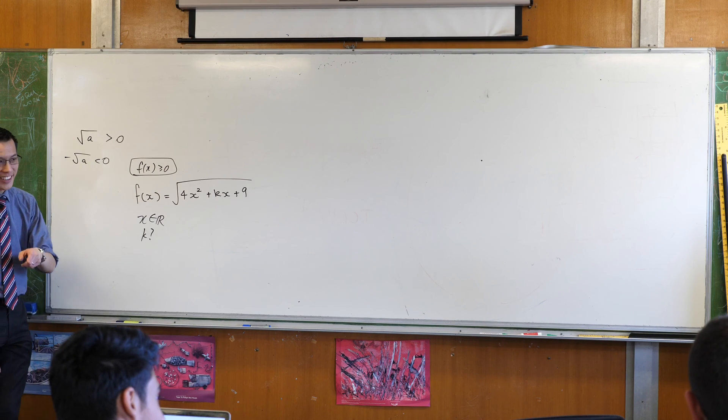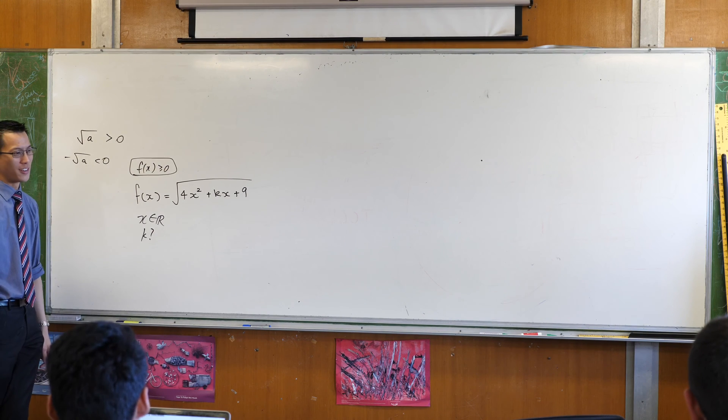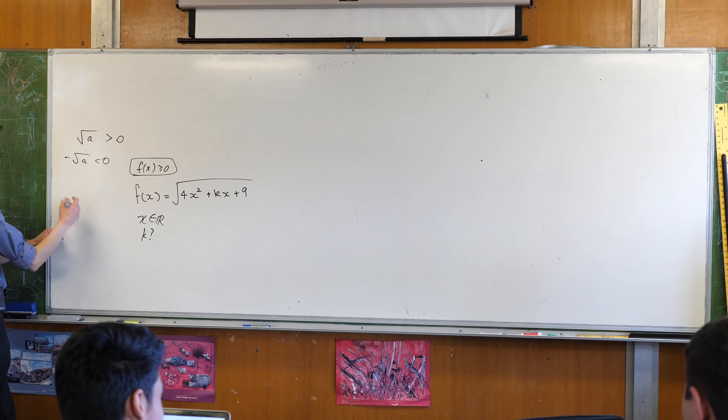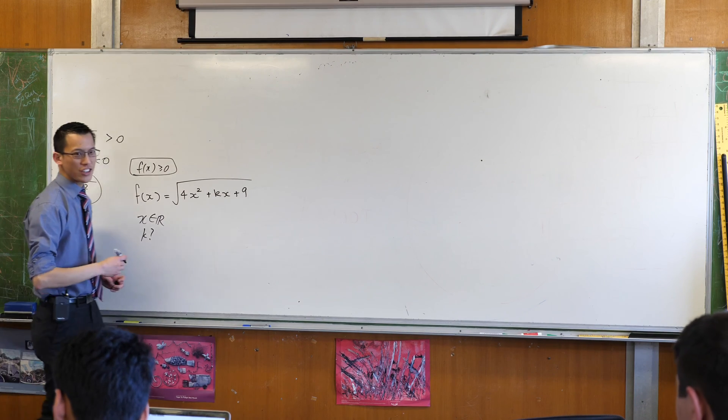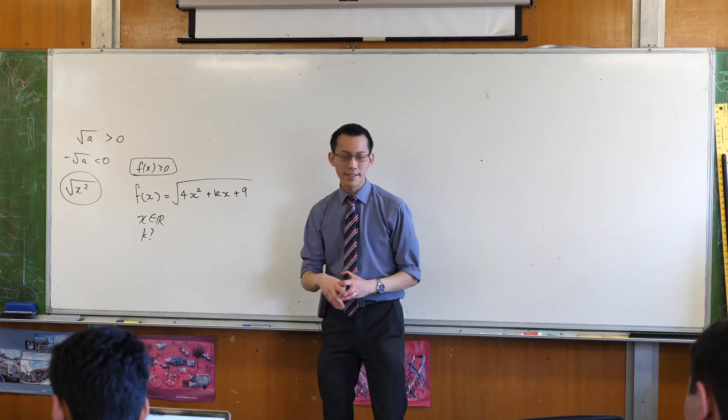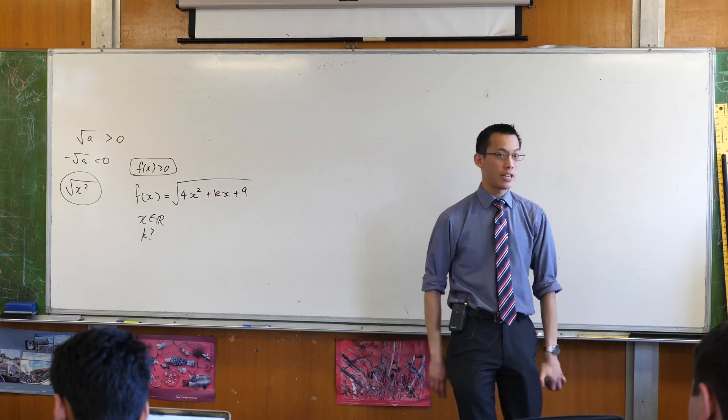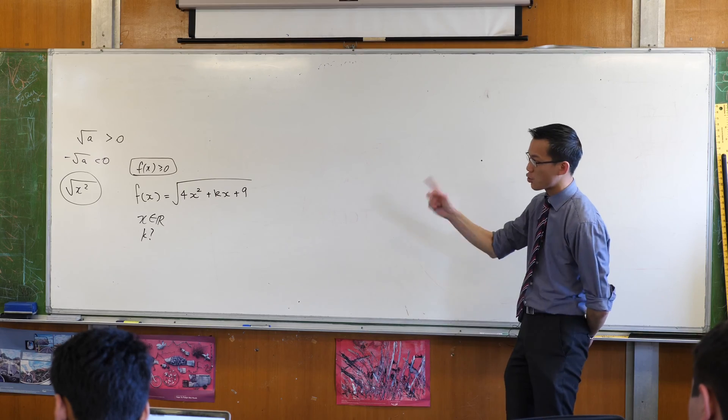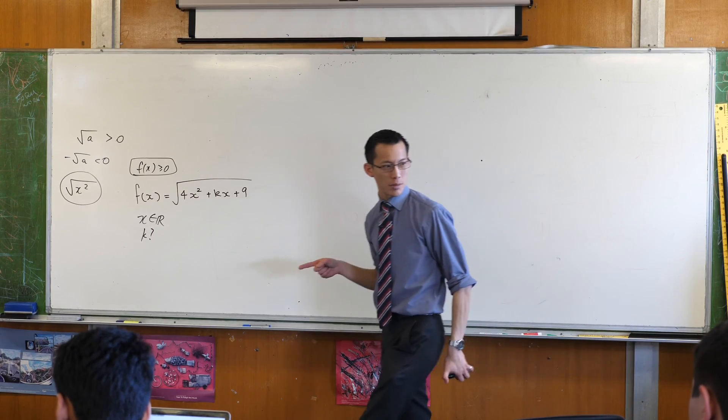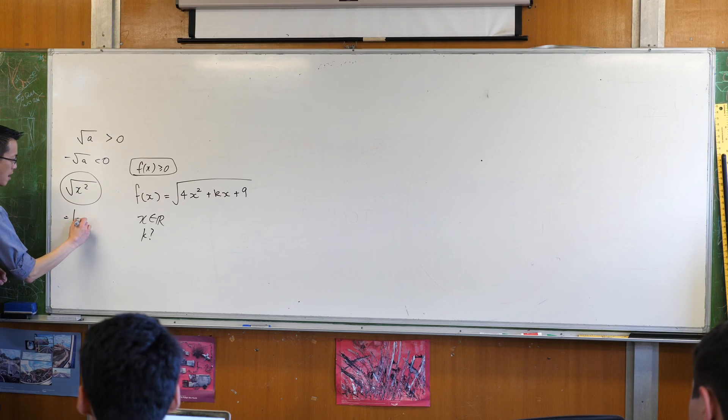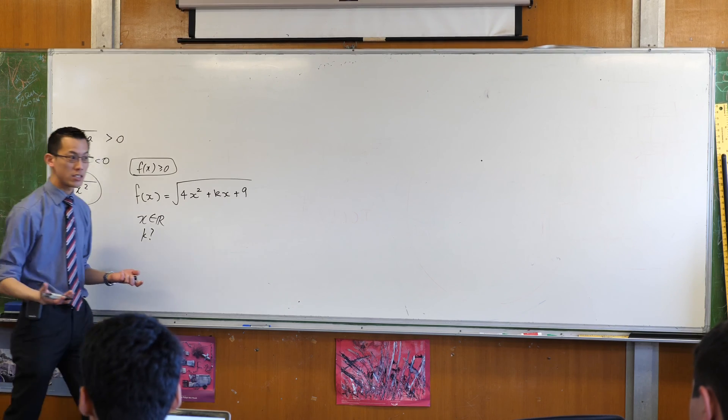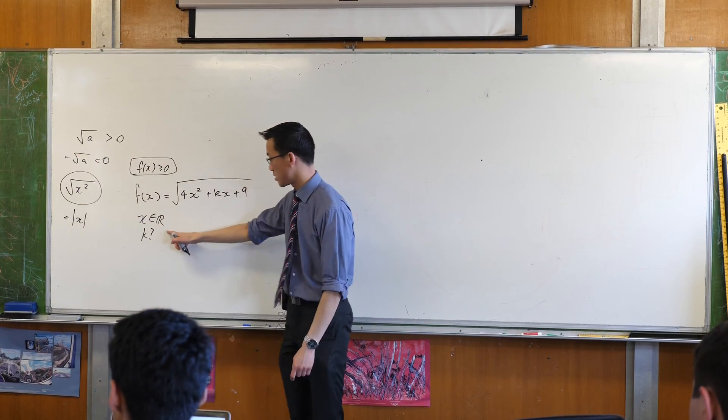Now quite clearly, there are functions involving a square root where you can put in any value of x that you like. The square root of x squared, that's actually something else you've heard of before. What is that? That's the absolute value of x, right. And that exists for all values of x. The domain is the same.